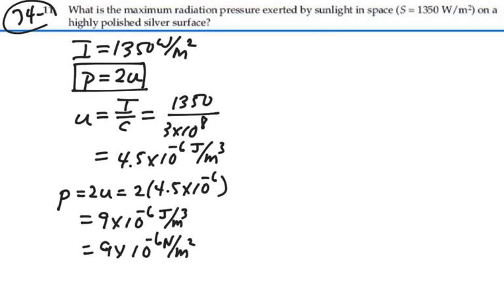And a newton per meter squared in turn is called a pascal. So this is 9 times 10 to the minus 6 pascals. And that's the radiation pressure exerted by sunlight on a highly polished silver surface. Thank you.